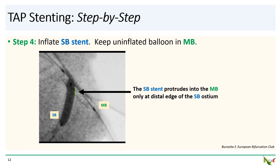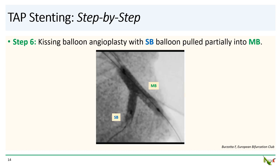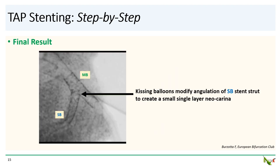In step four, the side branch stent is deployed. Note that the side branch stent protrudes into the main branch only at the distal edge of the side branch ostium. In step five, after the side branch stent balloon is deflated, pull it back halfway into the main branch in preparation for kissing balloon angioplasty. In step six, perform a final kissing balloon angioplasty with the side branch stent balloon pulled into the main branch. Kissing balloon angioplasty modifies the angulation of the side branch stent neocarina, and for smaller side branches and larger bifurcation angles, only a small neocarina is left behind.